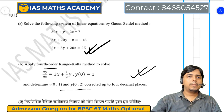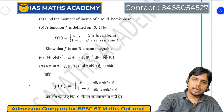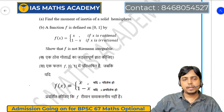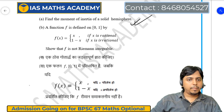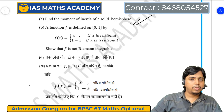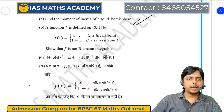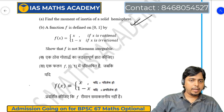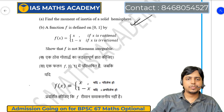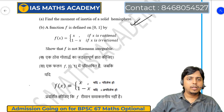Question number 12A में: find the moment of inertia of a solid sphere। Last time sphere का question पूछा था, इस बार solid sphere। Question 12B में: check करना है कि function Riemann integrable है कि नहीं, और prove करना है कि Riemann integrable नहीं है। x और 1-x दोनों functions जहाँ equal हों, उस point पर ही limit exist करता है — x = 1/2 पर limit exist करेगा, बाकी किसी point पर नहीं। तो Riemann integrability की condition satisfy नहीं हो रही, इसलिए यह function Riemann integrable नहीं है।